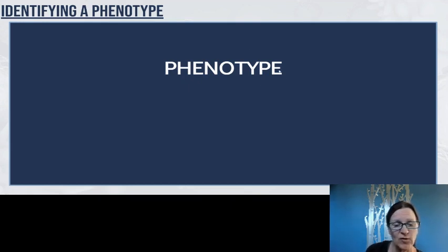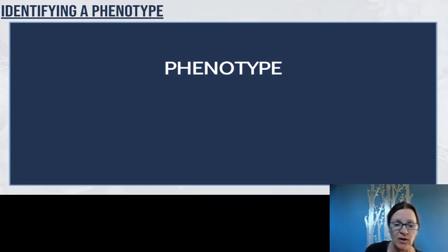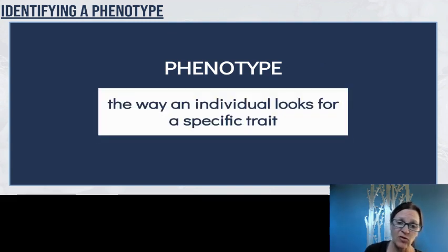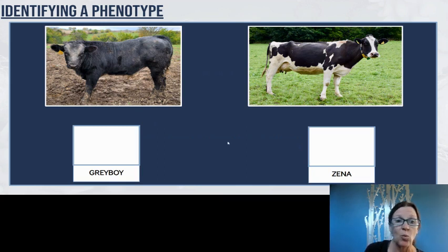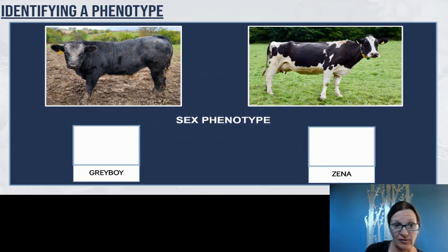The first thing I want to remind you of is this new scientific word we've introduced: phenotype. Phenotype is just the way an individual looks for a specific trait. For example, we've got these two cattle on our screen — we've got Gray Boy and we've got Xena. One of their phenotypes is the phenotype of sex: either male or female.